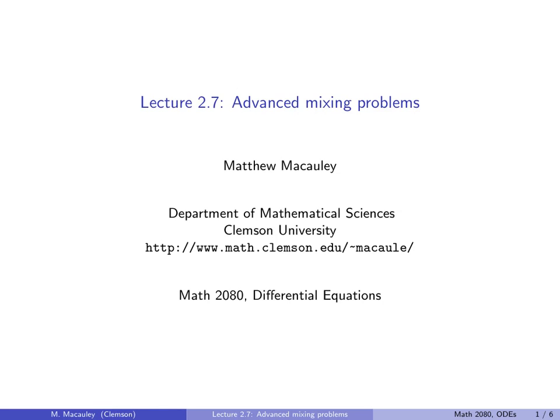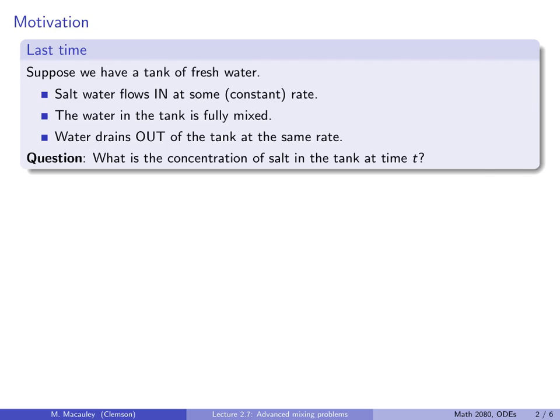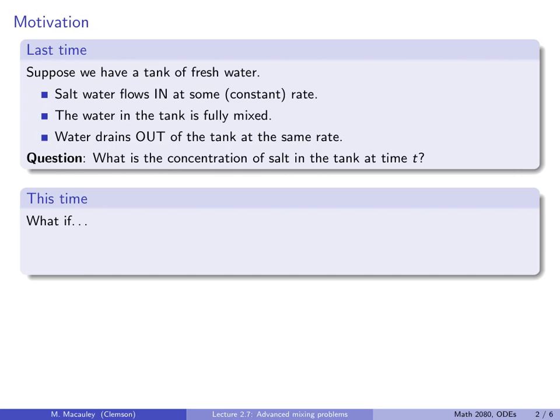Welcome to Lecture 2.7, Advanced Mixing Problems. Last time we did an example of a basic mixing problem: we had a tank of fresh water, salt water coming in at some constant rate, the water in the tank is fully mixed, and water is draining out at the same rate. We asked what is the concentration, or the amount, of salt in the tank at time t? This time, let's make this more complicated.